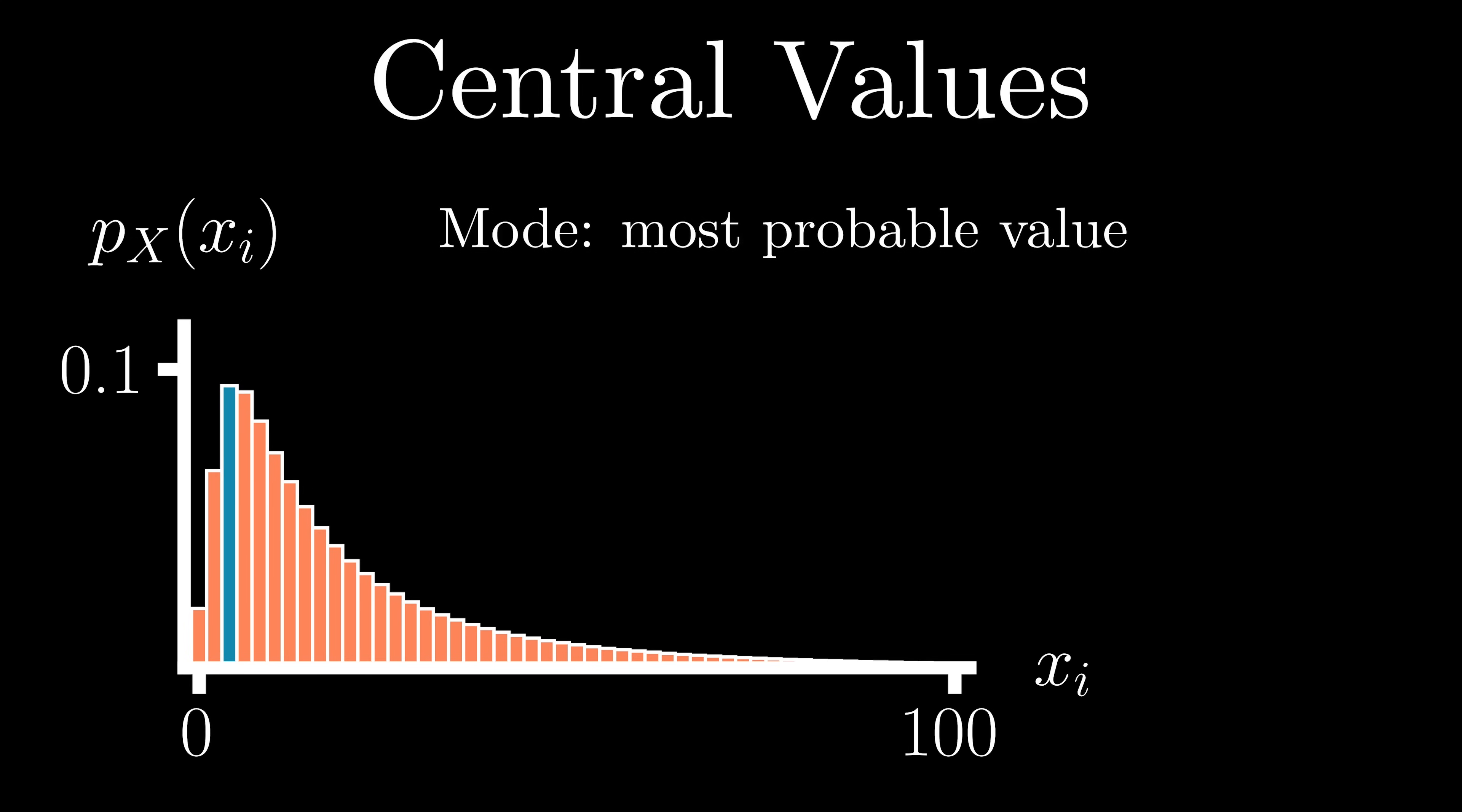Now with the mode of our distribution, we are really focusing our attention on a single value to describe a random variable, the outcome with the single largest associated probability. However, there are other ways we may want to think about defining our central tendency, particularly in this case, given that our distributions mode is pretty to the left.